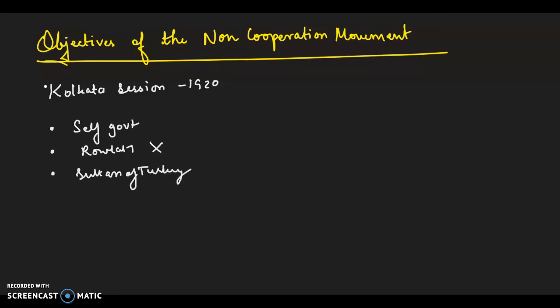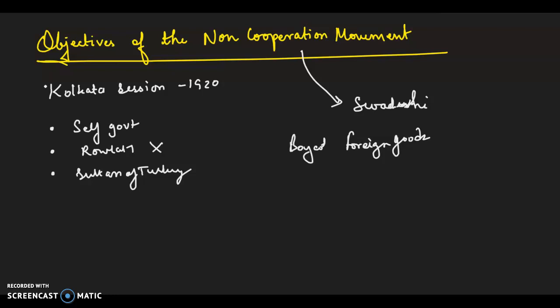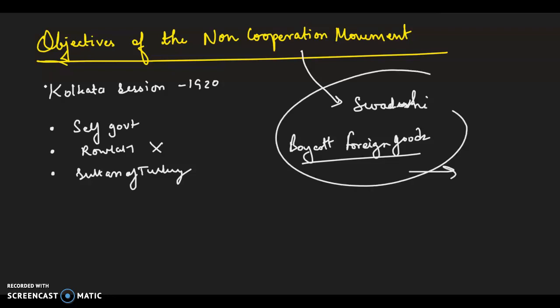The programs of the Non-Cooperation Movement emphasized the use of Swadeshi and boycott. These included boycotting government-run schools, colleges, and courts; boycotting foreign goods; promoting self-made goods; surrendering titles and honorary offices; popularizing the use of Swadeshi and Khadi clothes; establishing national schools and colleges as alternatives to government institutions; unifying Hindus and Muslims; and working for the emancipation and upliftment of women. Many eminent lawyers such as Dr. Rajendra Prasad and Motilal Nehru gave up their practice, and students left government institutions.